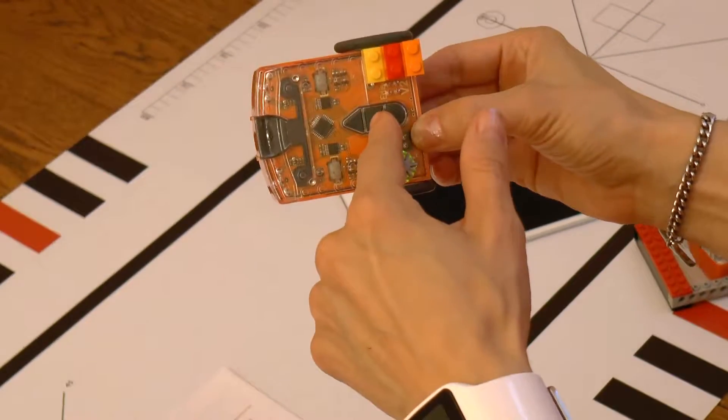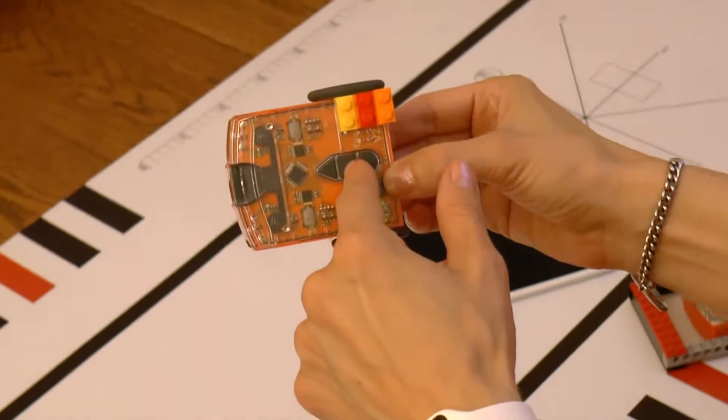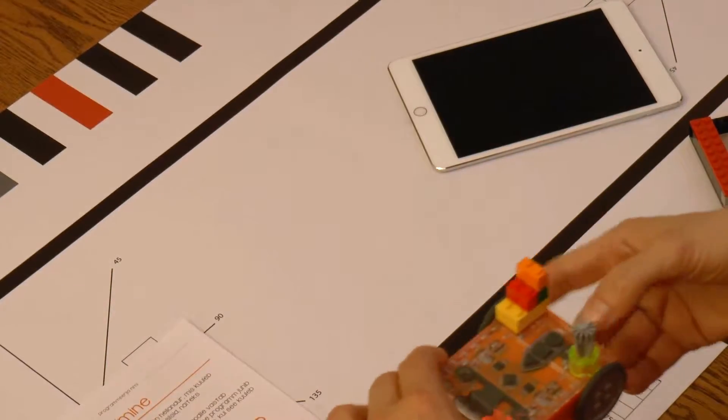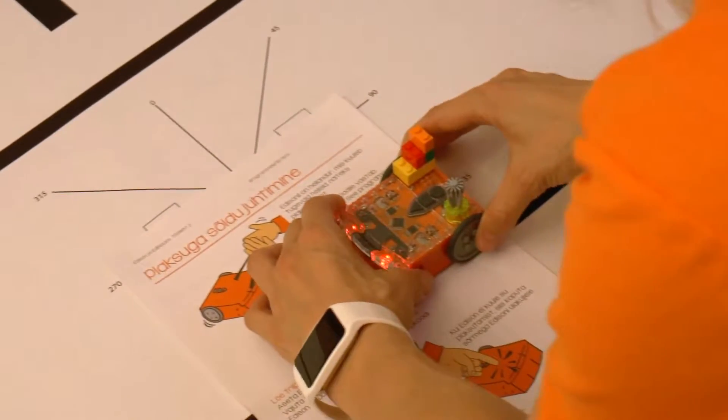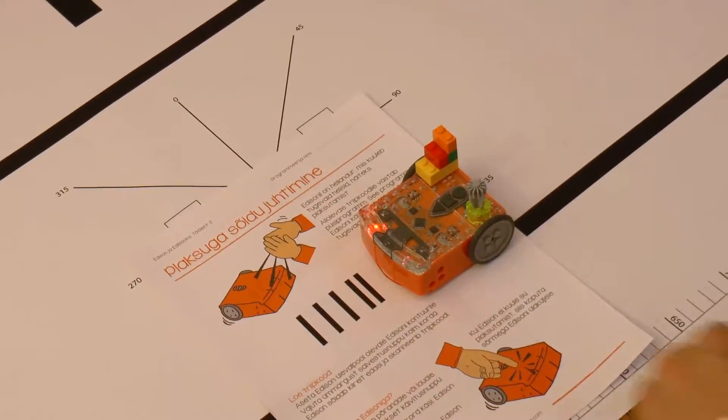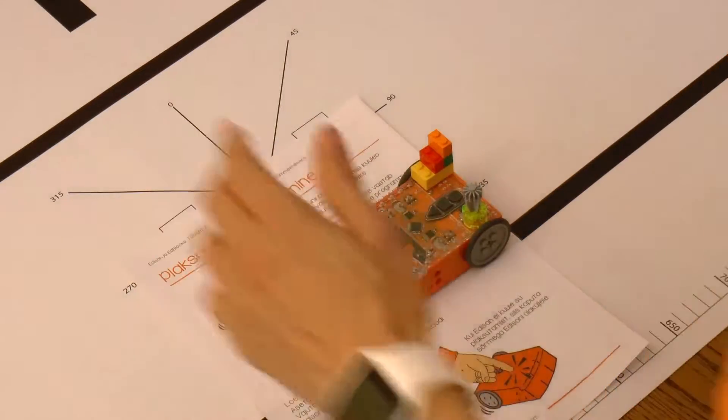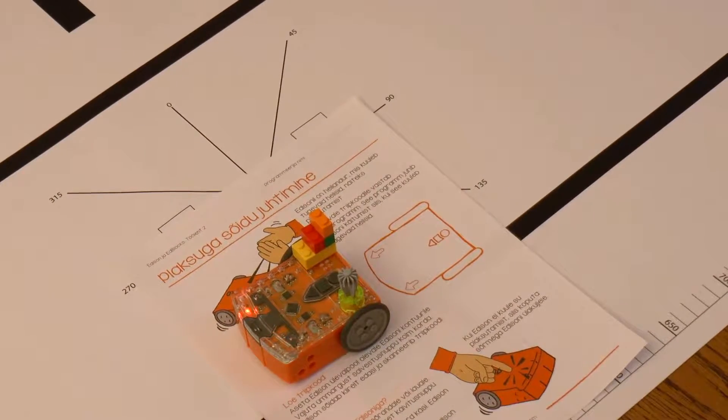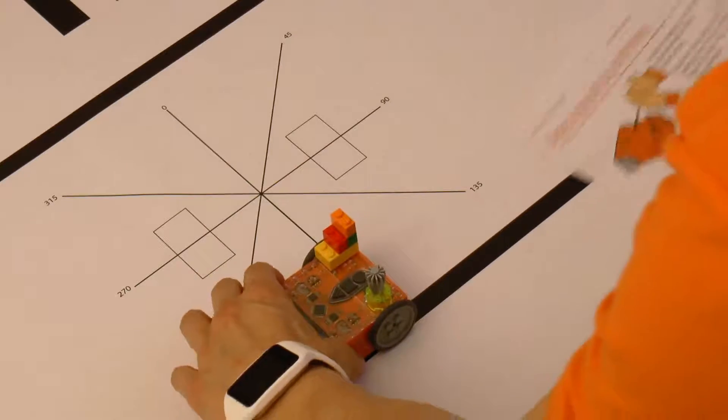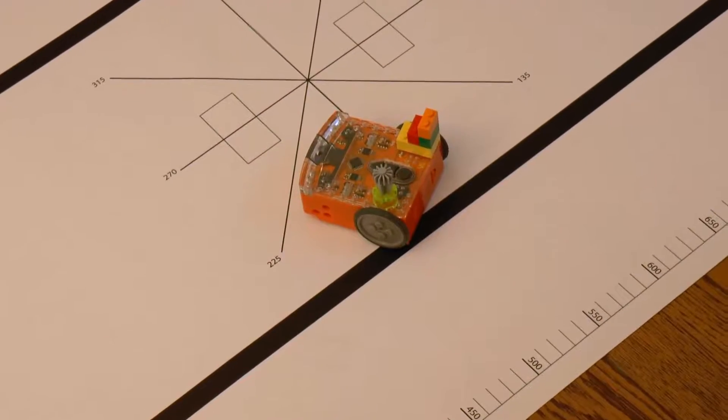Let's quickly go through downloading the program again. First, we make sure the red LEDs are flashing, then we place the robot in front of the barcode, press the circle button three times in a row and let Edison drive over the barcode, after which we can activate the program by pressing the triangular button.